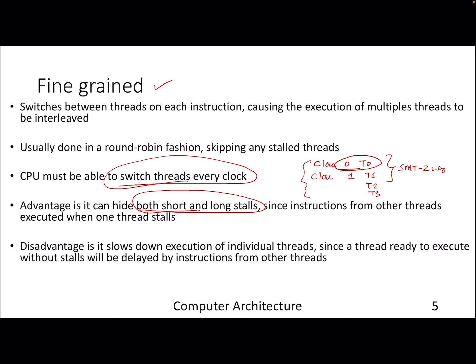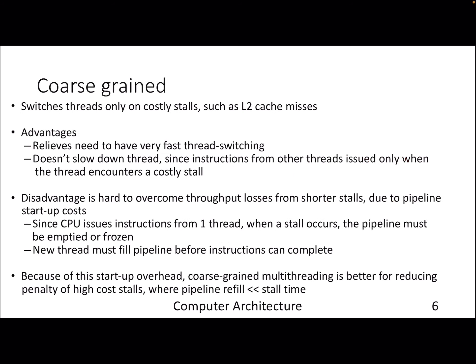For example, if you get a last-level cache miss, there is nothing to worry about because you are switching after every clock cycle. Even if a thread is waiting for hundreds of cycles, other threads can keep on continuing depending on the round-robin scheduler. The disadvantage is it slows down the execution time of individual threads, since even if a particular thread is ready with no stalls, it still has to wait for its turn in the round-robin order.